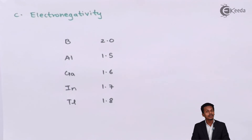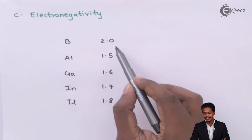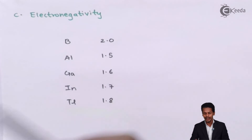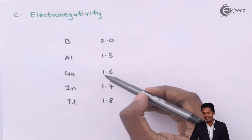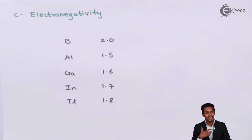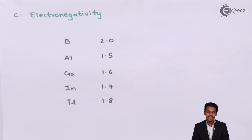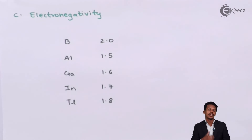So from Aluminium onwards, there is an increase in electronegativity rather than the expected decrease. There is a larger decrease from Boron to Aluminium, but after that the values go on increasing instead of decreasing. Since Boron has a higher electronegativity, it acts like a non-metal. Aluminium, Gallium, and others are basically the ones with metallic character. Thallium, with an electronegativity of 1.8, is the last member and has comparatively more electronegativity.